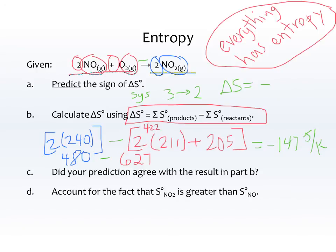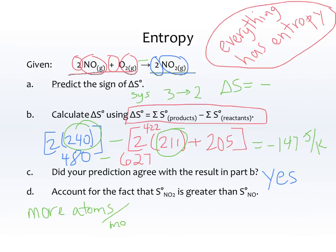Our prediction agreed with the result — we predicted negative and got negative 147 joules per Kelvin. NO2 had an entropy of 240 while NO had only 211. NO2 has greater entropy than NO because there are more atoms per molecule. Since there are more atoms per molecule, there are more ways to arrange those atoms and arrange the electrons within them, resulting in greater entropy.